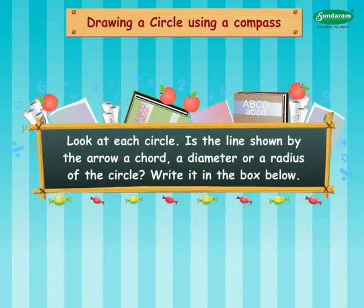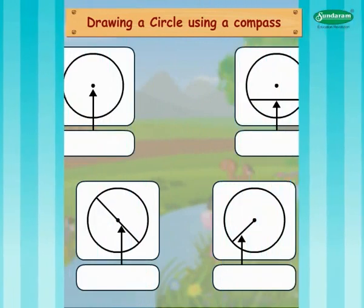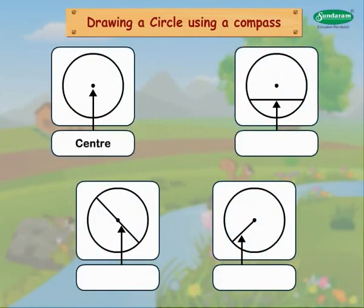Look at each circle. Is the line shown by the arrow a chord, a diameter, or a radius of the circle? Write it in the box below. Center. Chord. Diameter. Radius.